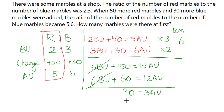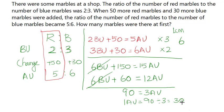So 1 after unit is equal to 90 divided by 3, which is 30. That means 1 after unit represents 30 marbles.